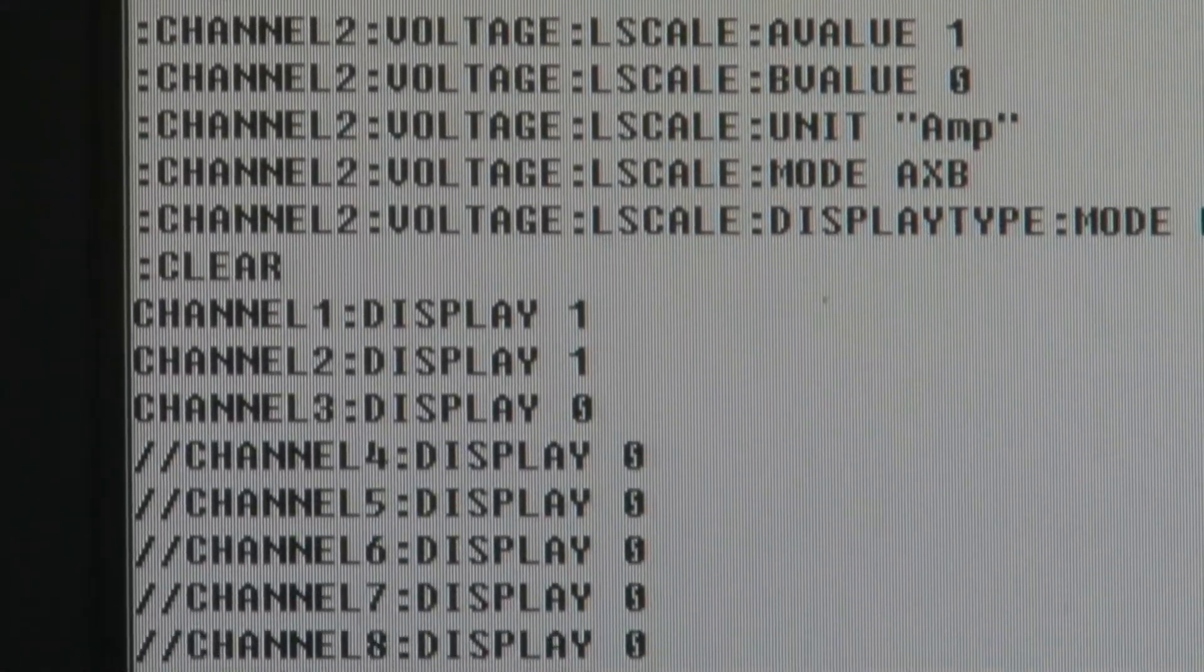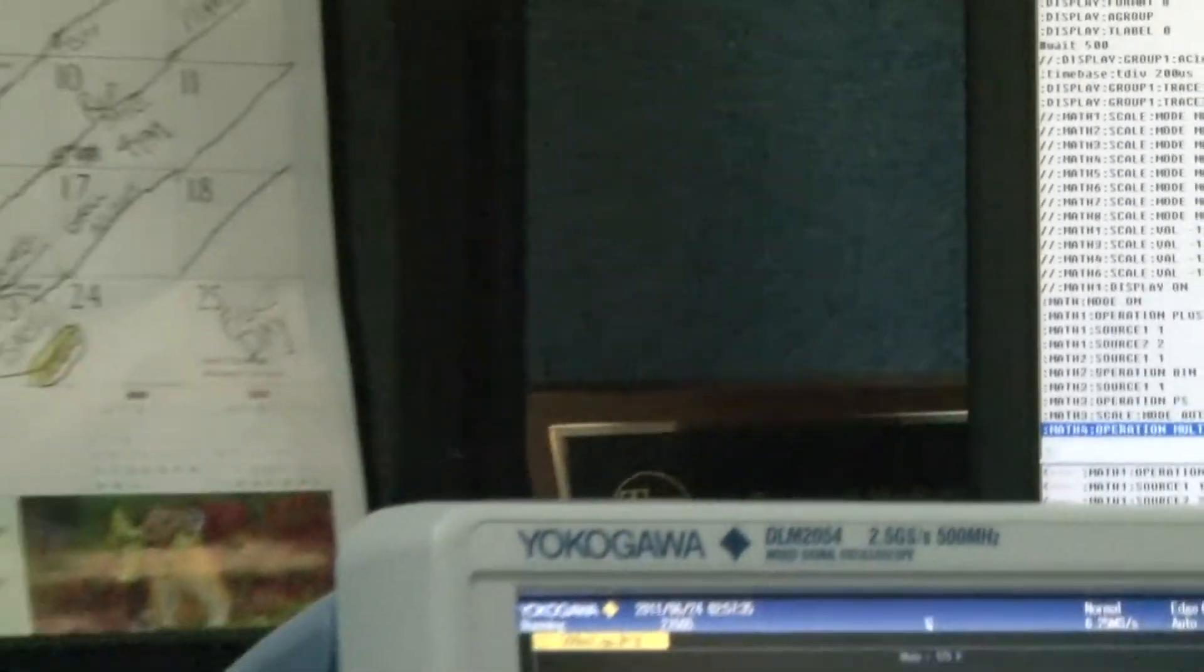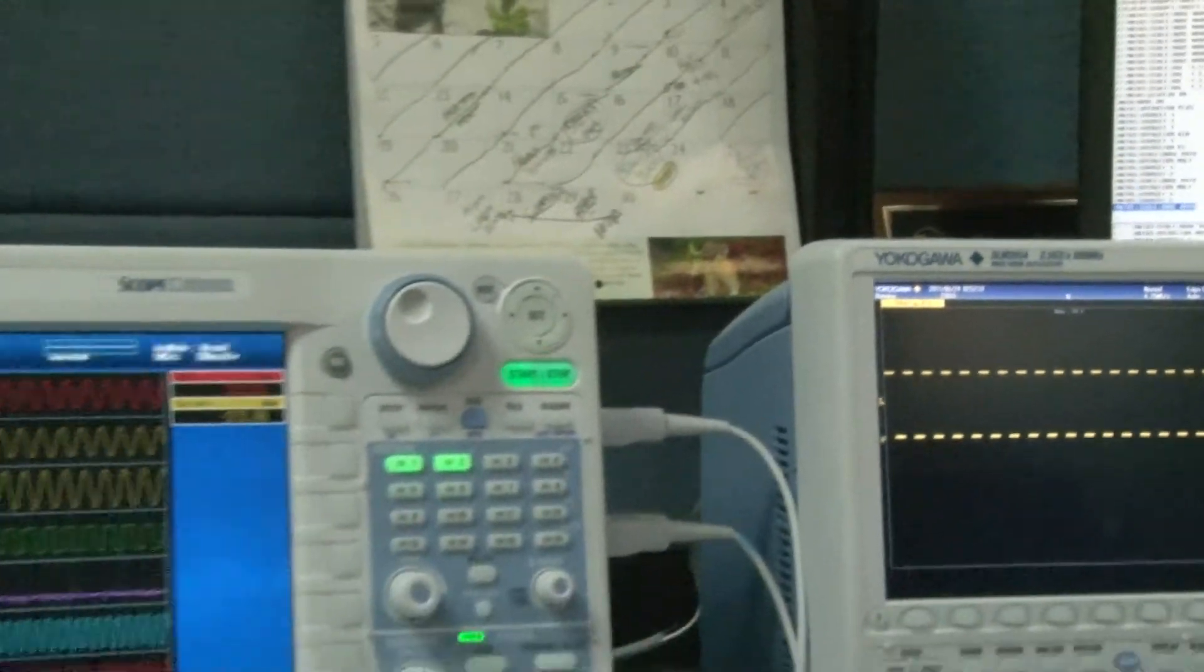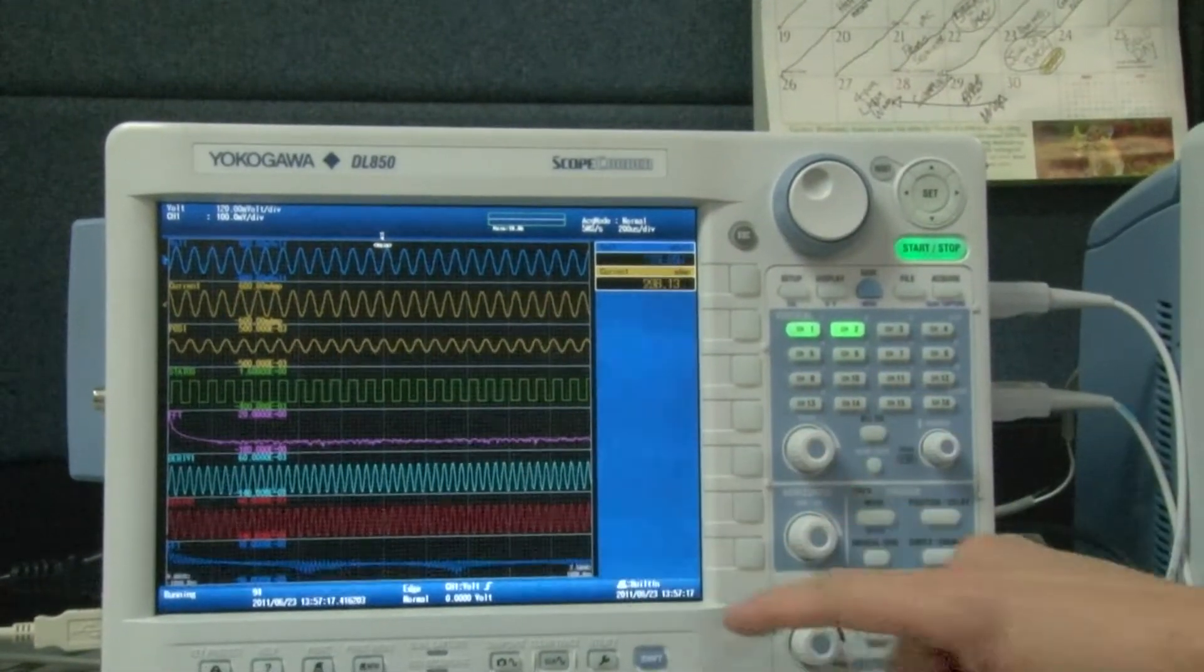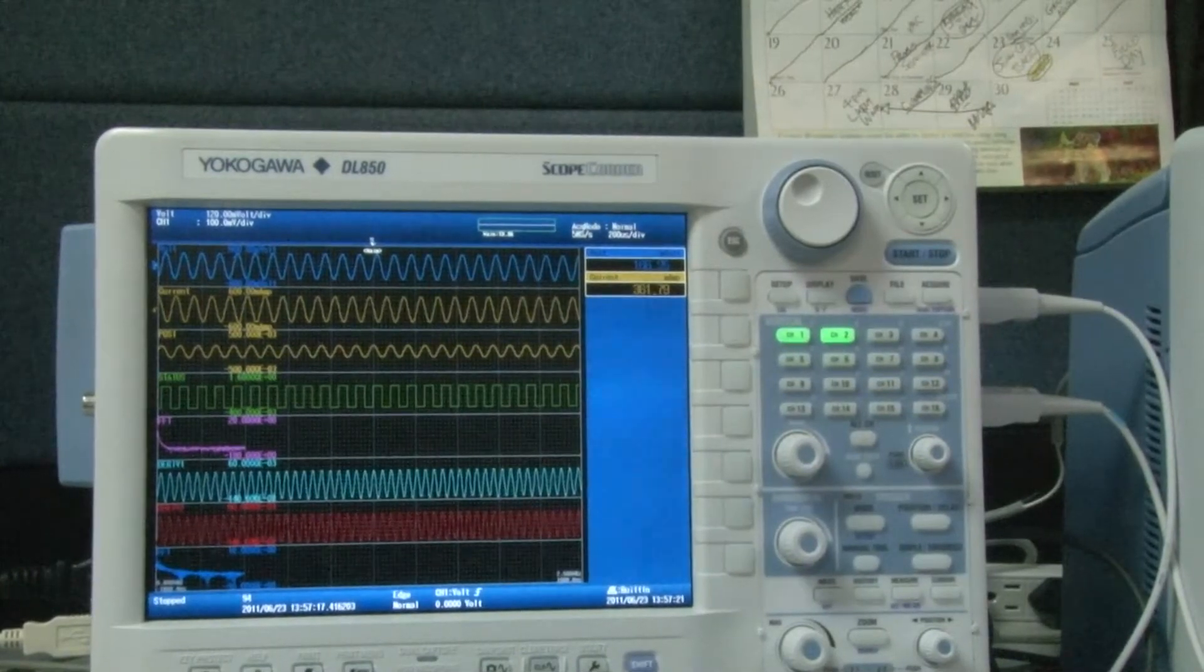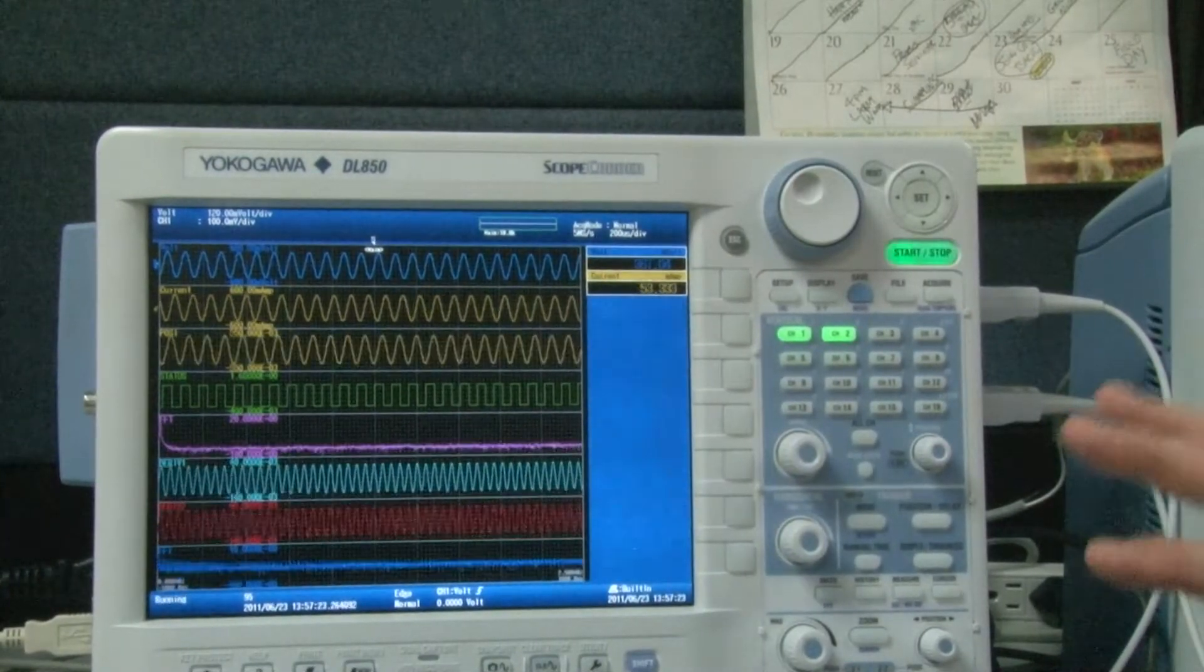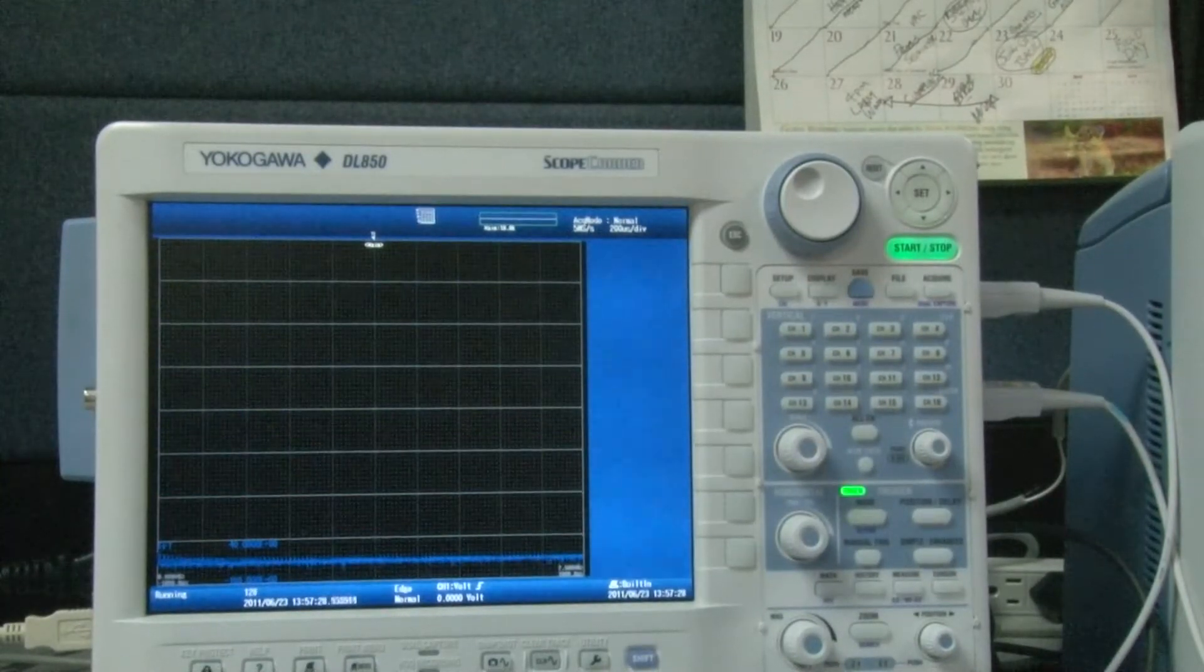Here I've initialized the scope corder, the DL-850, and I've brought up a pair of sine waves. I'm doing some quick math on those: multiplication, addition, subtraction, a binary function, and a pair of FFTs. This is math that's being performed on the data after it has been acquired and is already in memory.